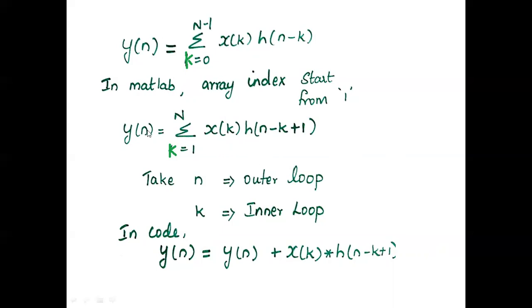We need two loops — one outer loop with variable n and one inner loop with variable k. The entire equation is a sum of products, written as: a = a + b, where a is the sum and b is the product. So we write: Y(n) = Y(n) + X(k) * H(n − k + 1).